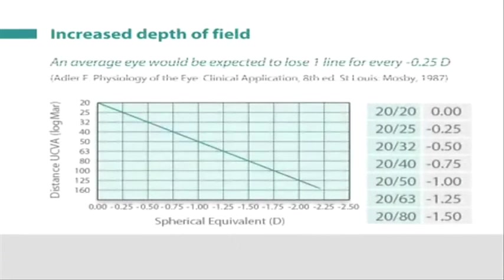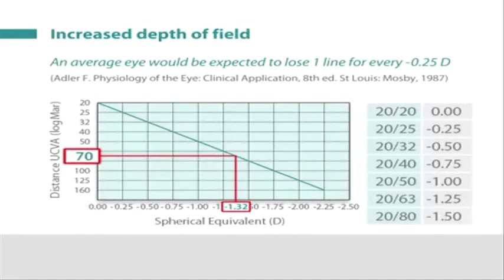To illustrate the increase in depth of field, the near eyes in the hyperopic group had a mean refraction of minus 1.32 diopters. So one would expect the mean uncorrected distance vision to be about 20/70.